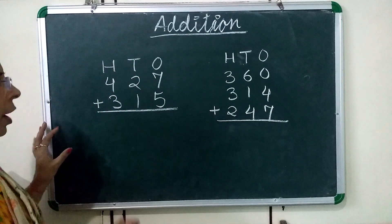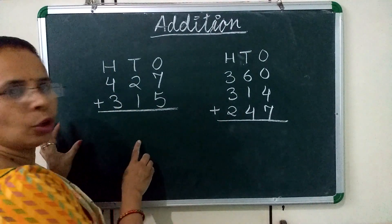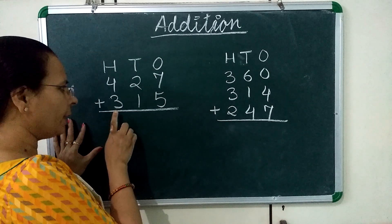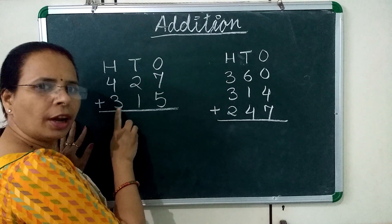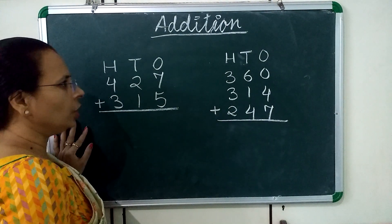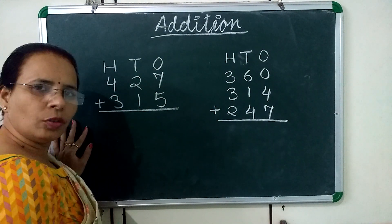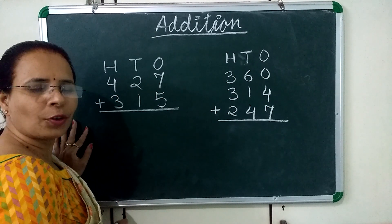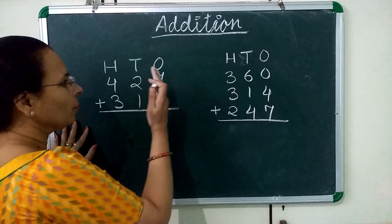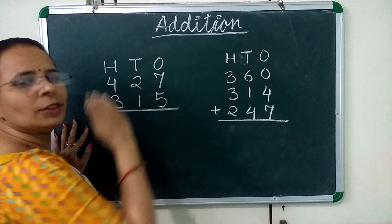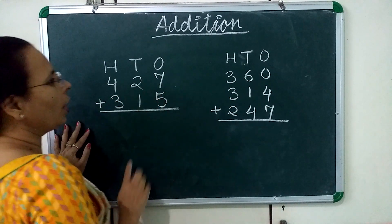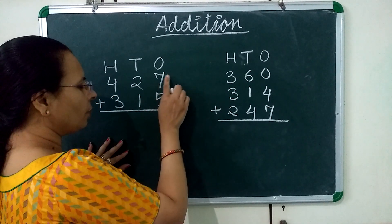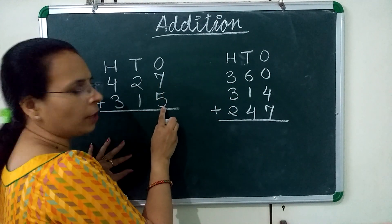First we have to add 427 and 315. Children, always remember addition starts from the 1's place. Now we have to add 7 and 5.